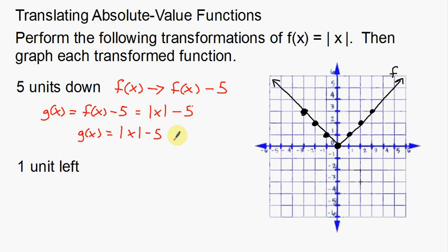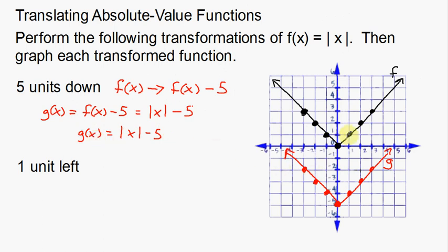Now I want to graph that. These are pretty easy to graph — I just take the absolute value function and move everything down 5 units. Take each of these points and move them down 5. Going up one, right one, up one, right one on the right side, and left one, up one on the left side. So there is my new function — I'll label it g on the graph. I color-coded it so I can tell the difference between my different functions.